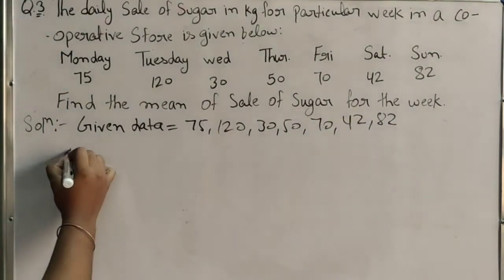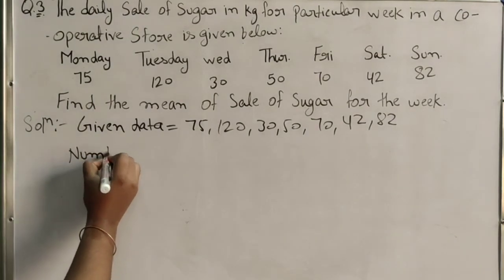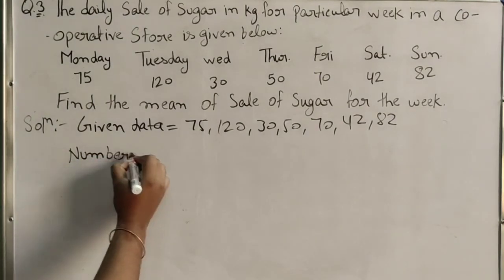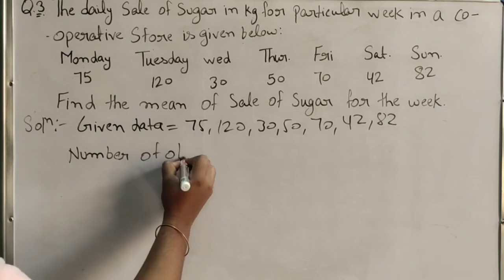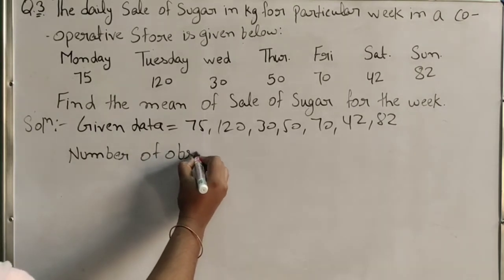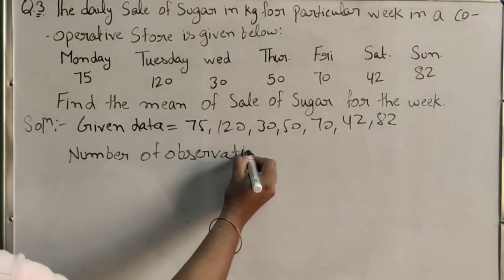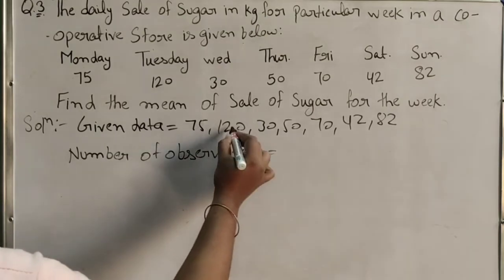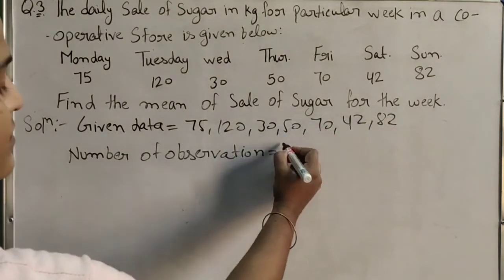Number of observations है: 1, 2, 3, 4, 5, 6, 7. So number of observations = 7.